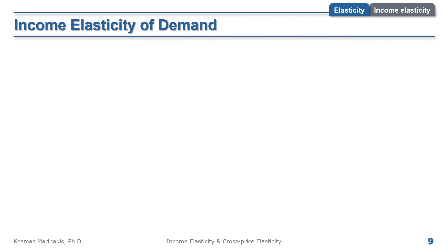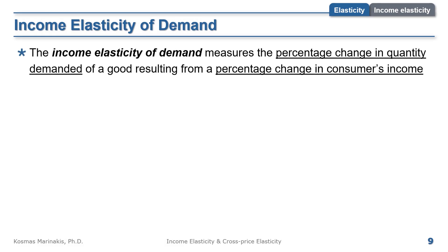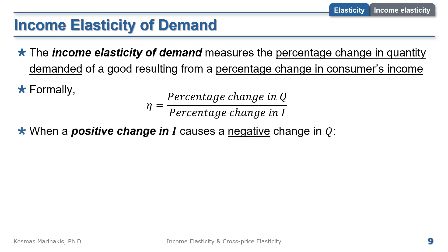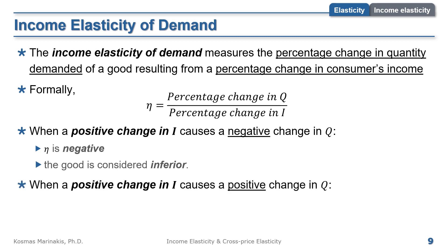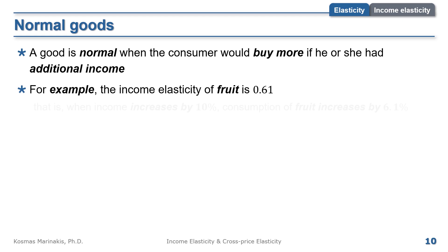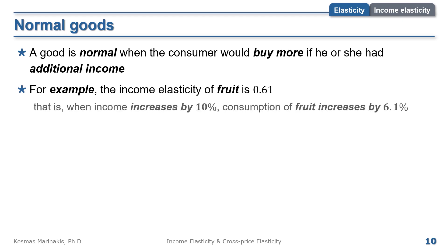Now we turn to the income elasticity of demand. It measures the percentage change in quantity demanded of a good, resulting from a percentage change in consumer's income. We use the Greek letter eta to denote income elasticity, and it is the ratio of the percentage change in quantity over the percentage change in income. When a positive change in income causes a negative change in quantity, the income elasticity is negative and the good is considered inferior. A good is normal when the consumer would buy more of it with additional income — for example, the income elasticity of fruit is 0.61.